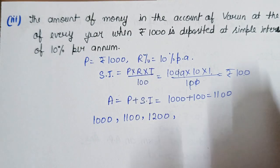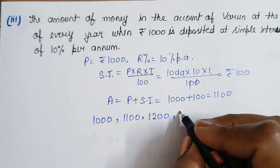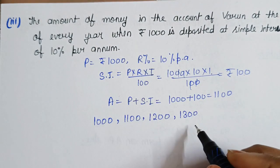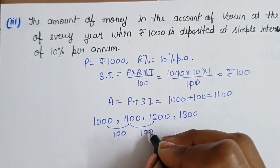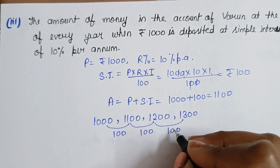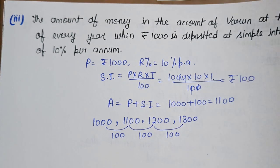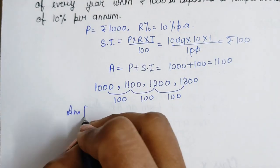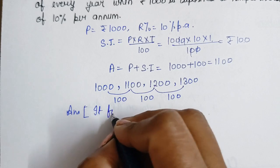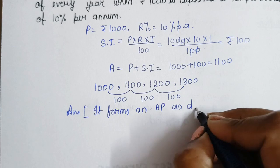For the third year, using simple interest again we get 100, so 1000 plus 300 gives Rs. 1300. The series is 1100, 1200, 1300, and so on. The difference between consecutive terms is 100 in every case, so the difference is the same. This forms an AP. Answer: it forms an AP as d is the same.